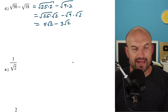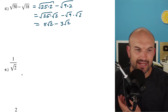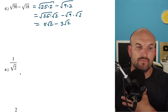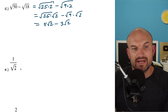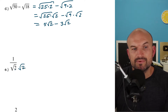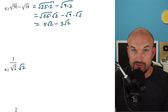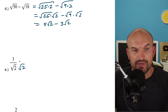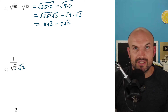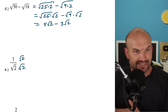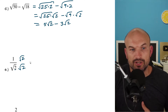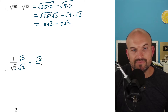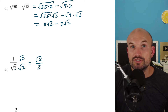Now, on to the next one. We have 1 divided by the square root of 2. We're going to want to simplify this so we don't have a radical in the denominator. To do that, we're going to rationalize the denominator — because square root of 2 times square root of 2 is the square root of 4, which is 2, so we'll be dividing by a rational number. Make sure you multiply by the square root of 2 in both the numerator and the denominator to produce an equivalent fraction. This gives us the square root of 2 over 2.